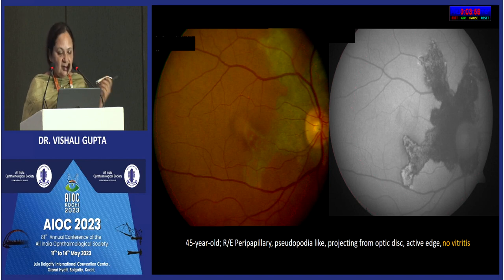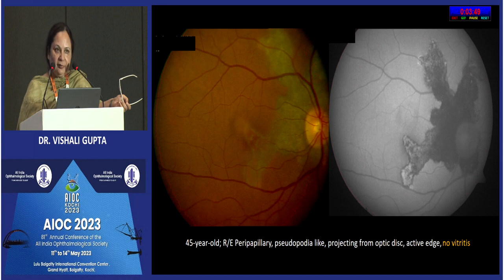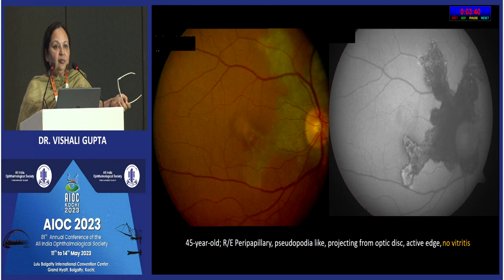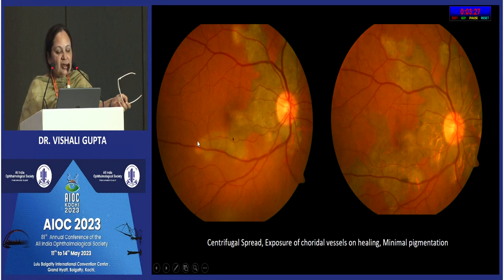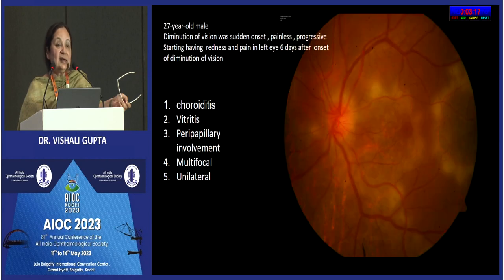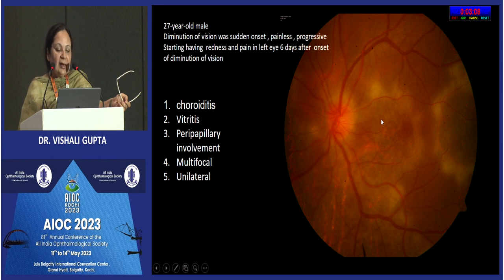Serpiginous chorioretinitis grows along the edge very typically and is non-infective by and large. What we confuse it with is TB — serpiginous-like chorioretinitis — which is very different. TB-related is multifocal, may have associated vitritis and anterior segment inflammation, which should not happen in autoimmune serpiginous chorioretinitis. Unilaterality is common; if you see scleral involvement with serpiginous-like chorioretinitis, TB is a very likely diagnosis. On FFA and ICG, the center of the lesion will be healing while the periphery will be active.